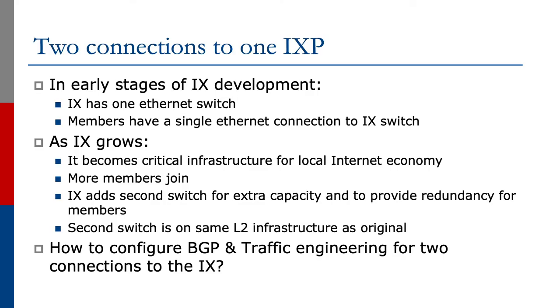The next example we're going to look at is where the network operator has two connections to one internet exchange point. In the previous multi-homing examples we demonstrated just a single router connecting to the IX LAN.